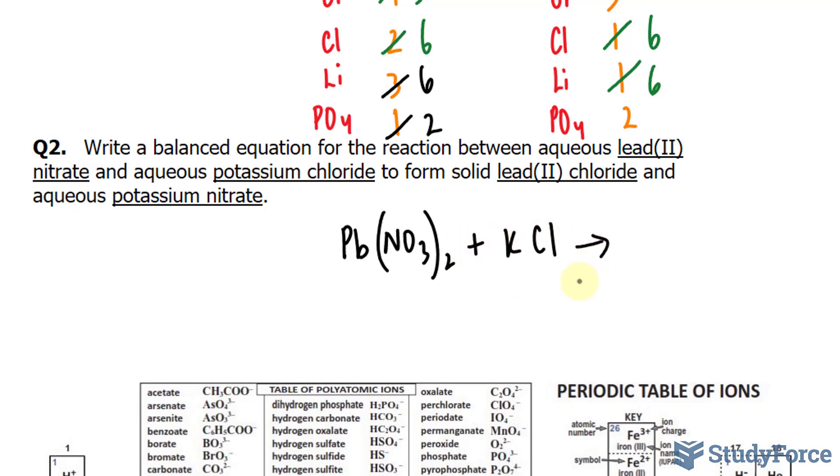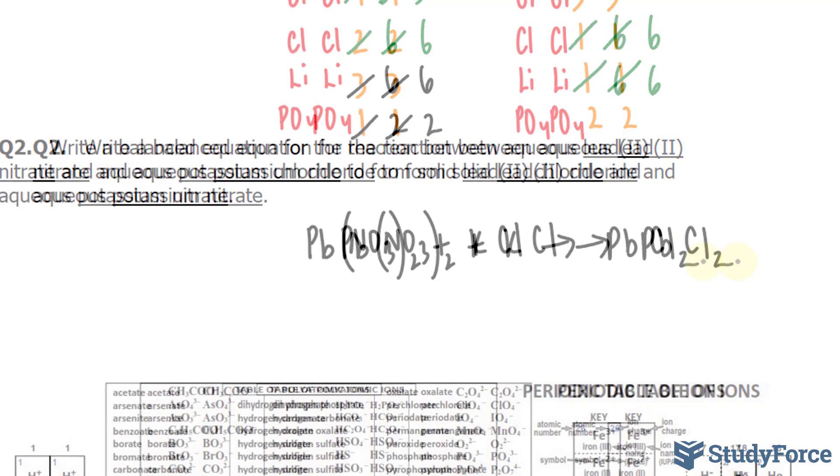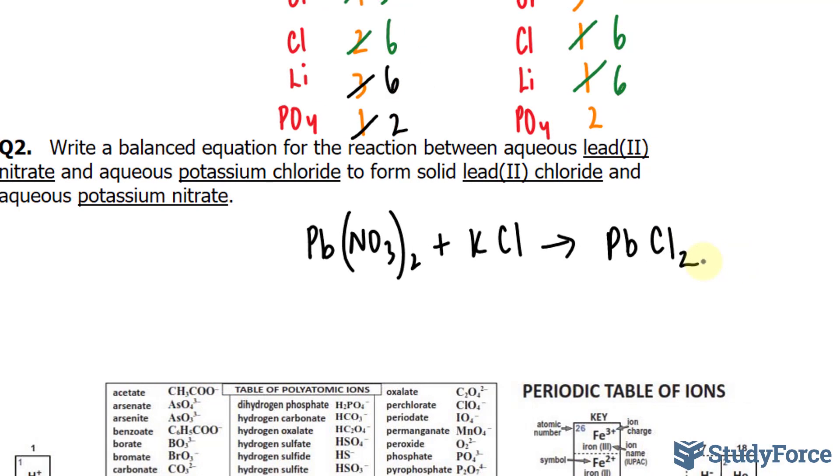This yields solid lead(II) chloride. Lead, once again, is Pb. Chlorine has a charge of 1 minus, so that won't influence the subscript of Pb. But Cl will have a subscript of 2.